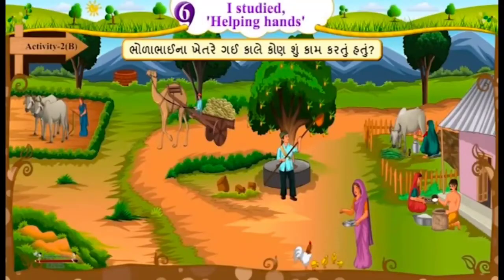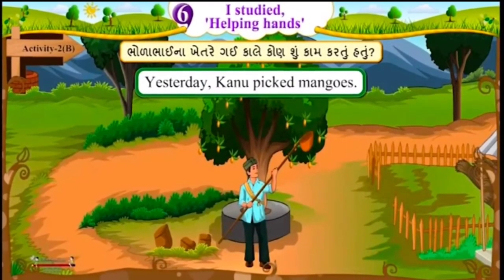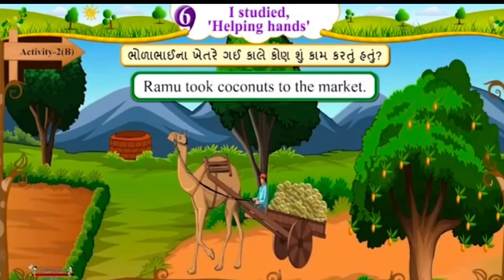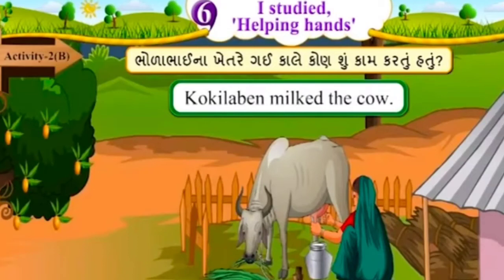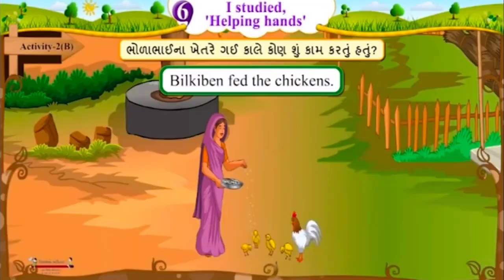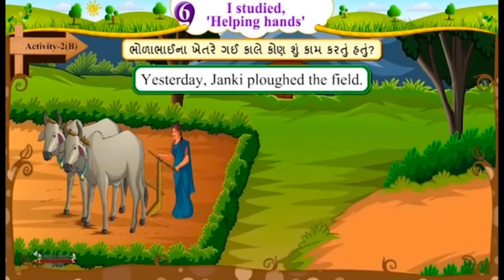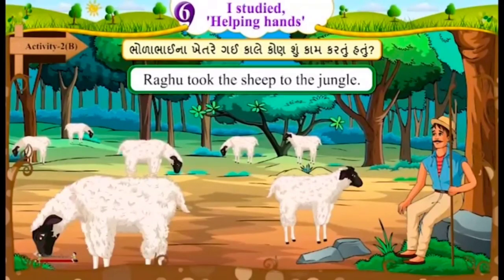Yesterday at Bola Bhai's Farm - બોળા ભાઈ ના ખેતરે ગઈ કાલ કોણ શું કામ કરતું હતું. Yesterday: Kanu picked mangoes. Ramu took coconuts to the market. Manju Ben and Bola Bhai put rice in the jute bag. Kokila Ben milked the cow. Bilky Ben fed the chickens. Yesterday Janki plowed the field. Raghu took the sheep to the jungle.